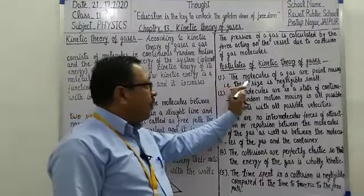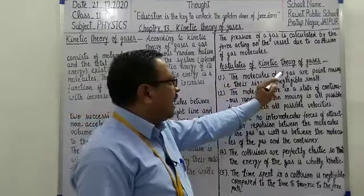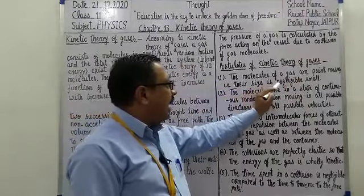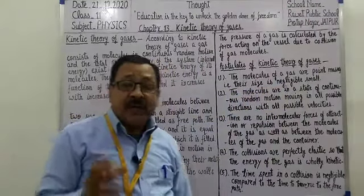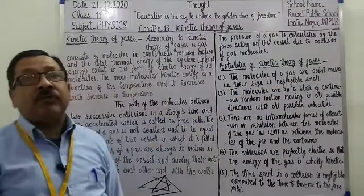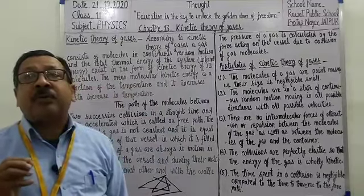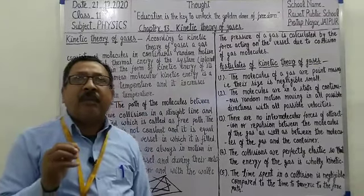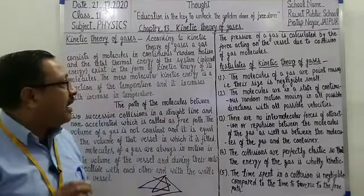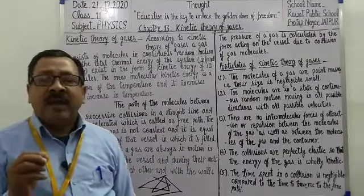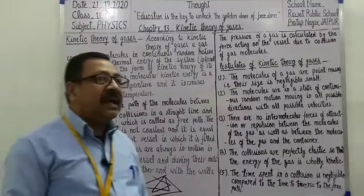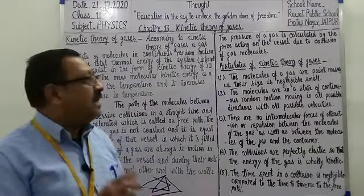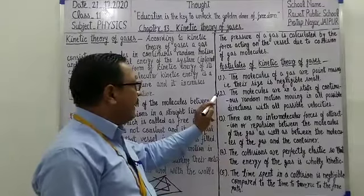Number one: the molecules of a gas are point masses; their size is negligibly small. یعنی gas کے جو molecules ہوتے ہیں، ان کا mass بہت کم ہوتا ہے — isolated particles ہوتے ہیں، بہت ہی small ہوتے ہیں۔ ان کے size کو ہم negligible کر سکتے ہیں، یعنی یہ molecules آنکھ سے properly دیکھے نہیں جا سکتے — اتنے چھوٹے ہوتے ہیں۔